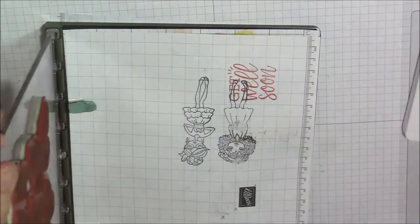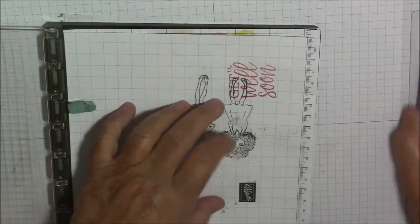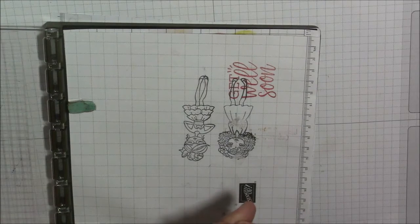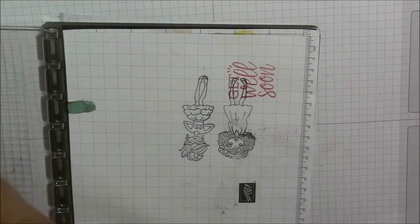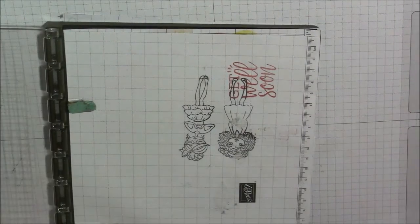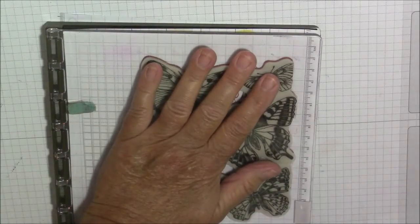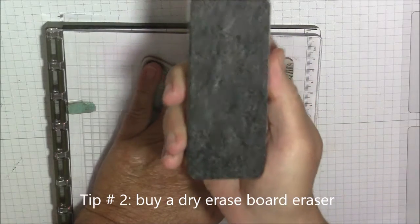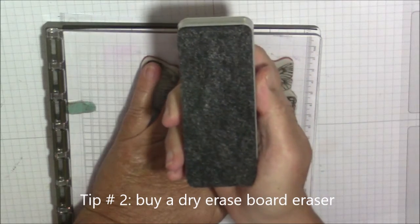We're going to ink it up and stamp here on our paper because we want to know where that stamps. I'm just stamping it up lightly. Then my tip is picking up one of these dry erase board erasers. This cost me less than two dollars at a big box store.